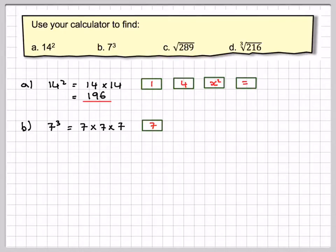So that's going to be 7, and this button here, which is x with a little dot on it, we have to put in the 3 to make it x cubed, and then equals, and that gives me 343.